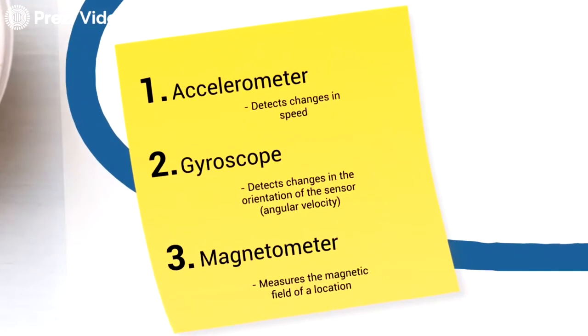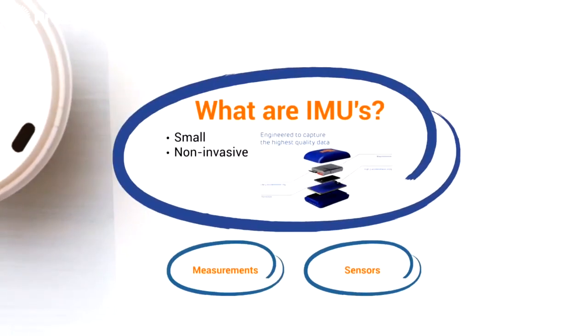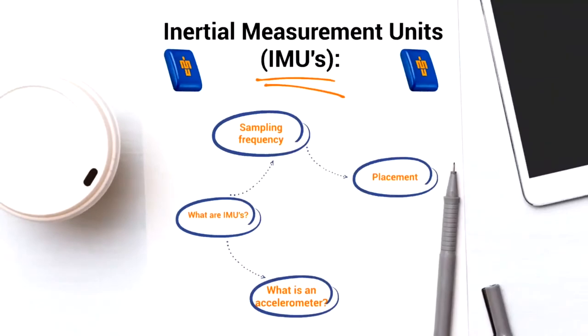If we take a look at the accelerometer they can detect changes in speed. A gyroscope detects changes in the orientation of the sensor, also known as the angular velocity, whereas the magnetometer measures the magnetic field of a location. Okay, so that's just the basics of the sensors. But let's take a deep dive into one of the sensors, the accelerometer.